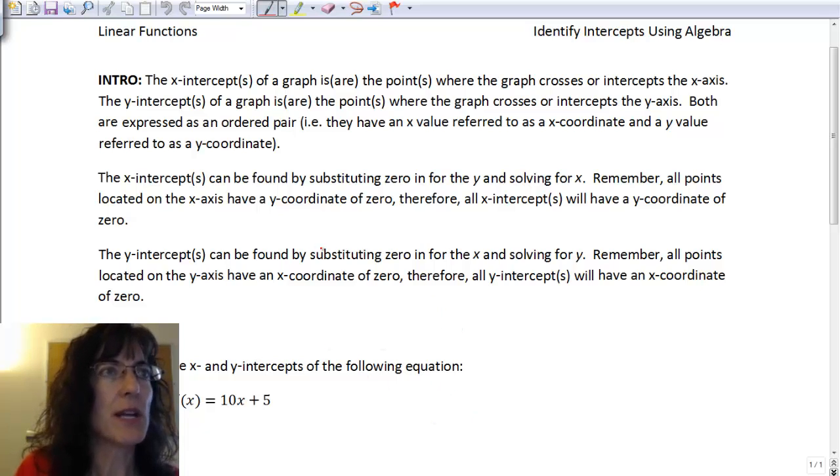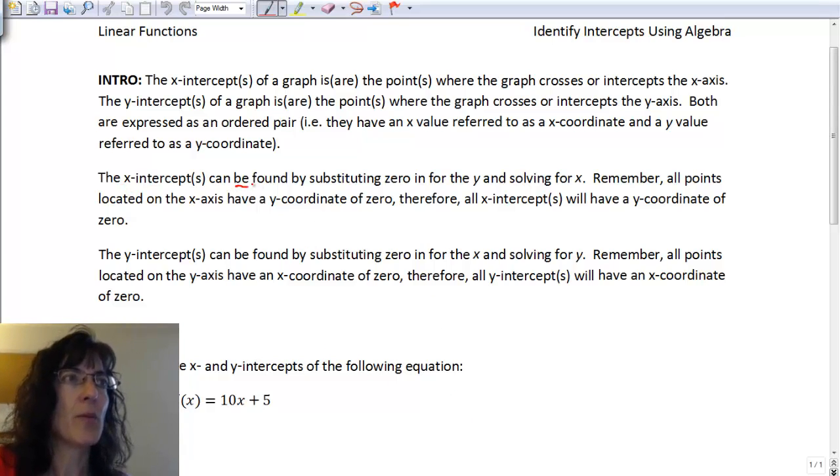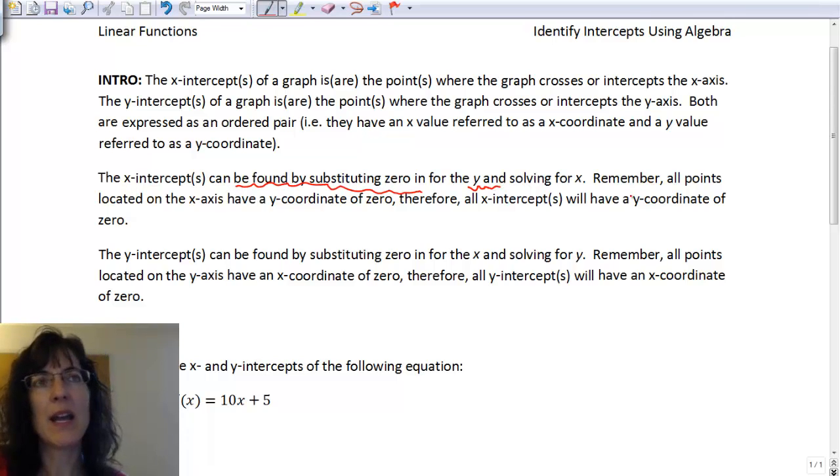The x-intercepts can be found by substituting 0 in for the y and then solve for x. So it's the opposite of the one that you're solving for. So if you're finding an x-intercept, you plug in 0 for the y part. And all points on the x-axis have a y-coordinate of 0. That's why we stick in the 0 for the y.